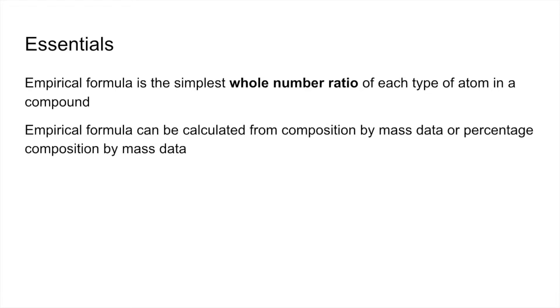Empirical formula can be calculated from composition by mass data or percentage composition by mass data. Molecular formula is the actual number of each type of atom in a compound.